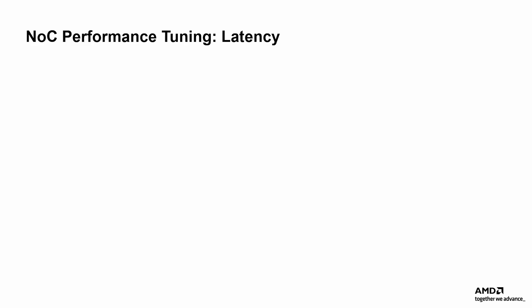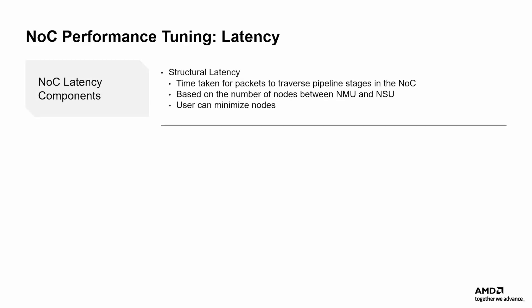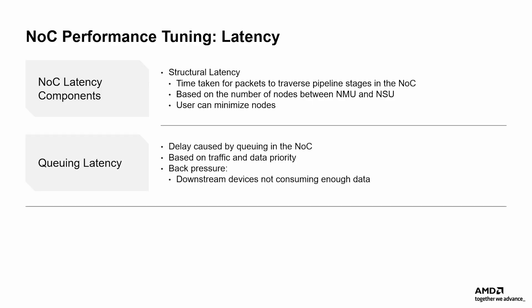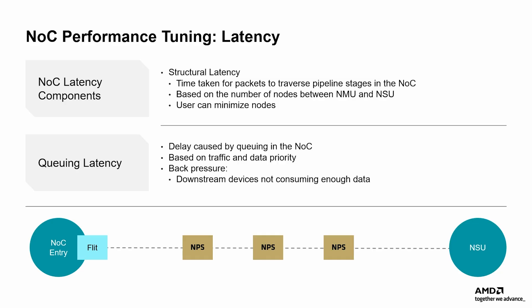NOC latency is influenced by both the physical structure of the interconnect and dynamic conditions during operation. Structural latency is determined by the number of switches and hops a transaction must traverse between the NMU and NSU. Queuing latency occurs when there is high contention for resources or when a sink device processes data more slowly than it is received. Longer physical distances between NMUs and NSUs require more NOC resources and additional pipeline stages, which can further increase latency. Careful floor planning to place NMUs and NSUs closer together helps minimize hops and reduce overall transaction delay.